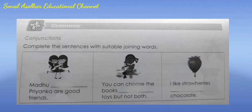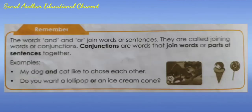The next part is the grammar part - Conjunctions. Complete the sentences with suitable joining words. Madhu and Priyanka are good friends. You can choose the books or toys but not both. I like strawberries and chocolate. Always remember: the words 'and' and 'or' join words or sentences. They are called joining words or conjunctions.